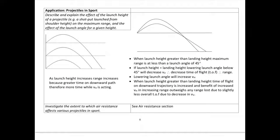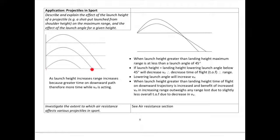Now let's look at the effect of launch height — an application to projectiles in sport, with the shot put as the key example. As we increase the launch height above the landing height, the range increases, which seems like common sense. The reason is that greater launch height means greater time on the downward path, giving more time for horizontal velocity to act, and therefore increasing range. Increasing the launch height even further increases this effect.